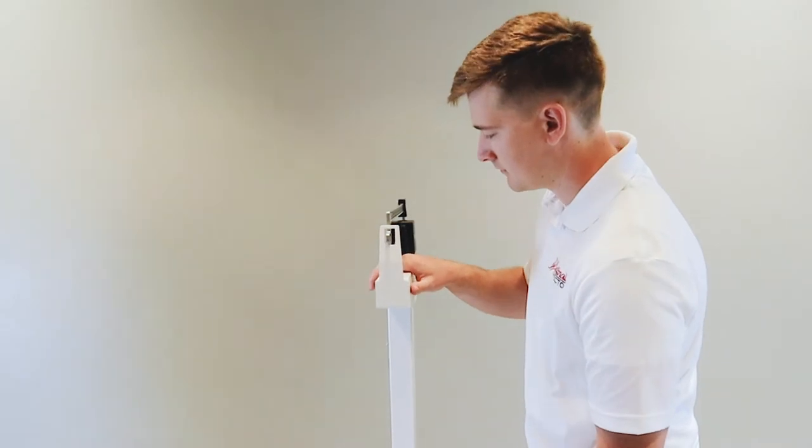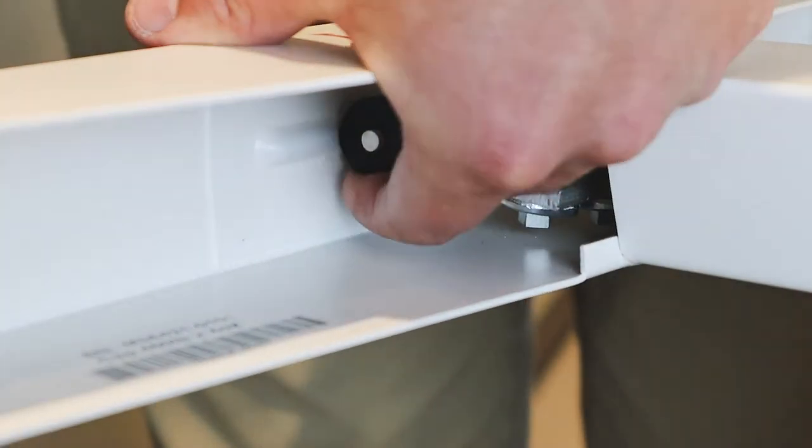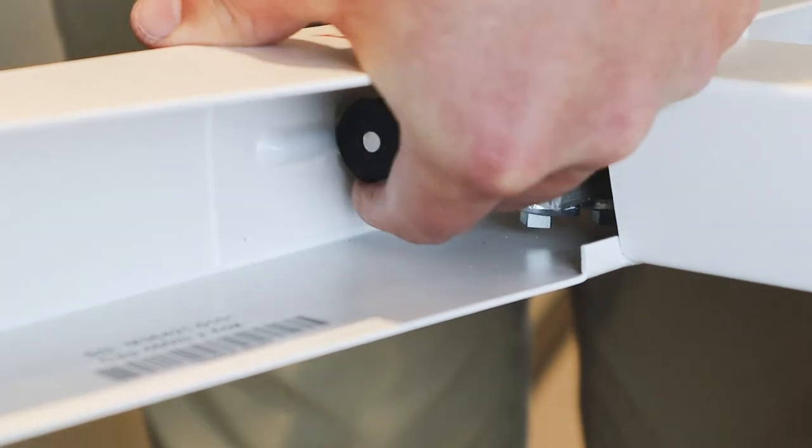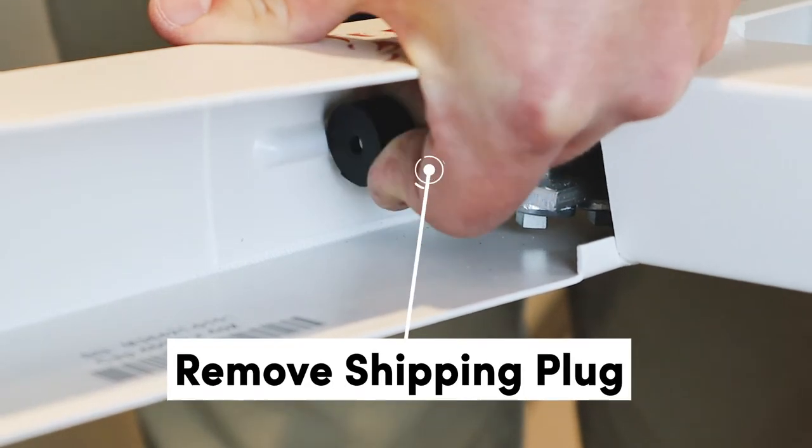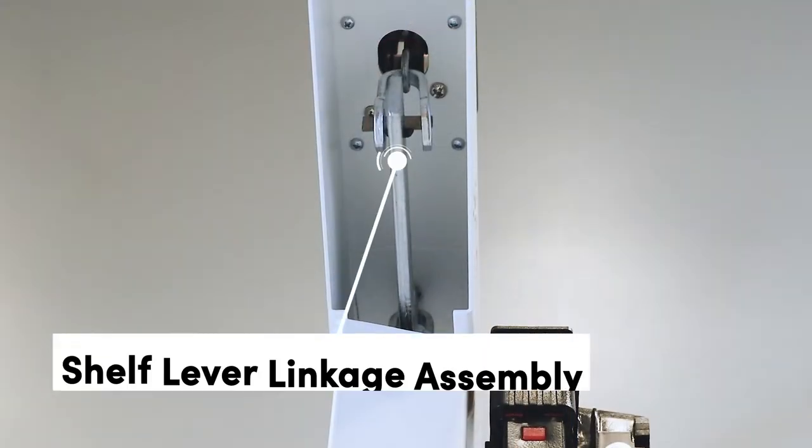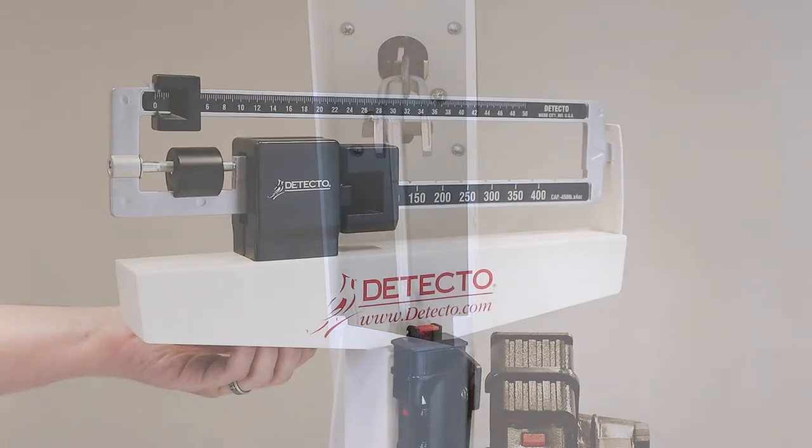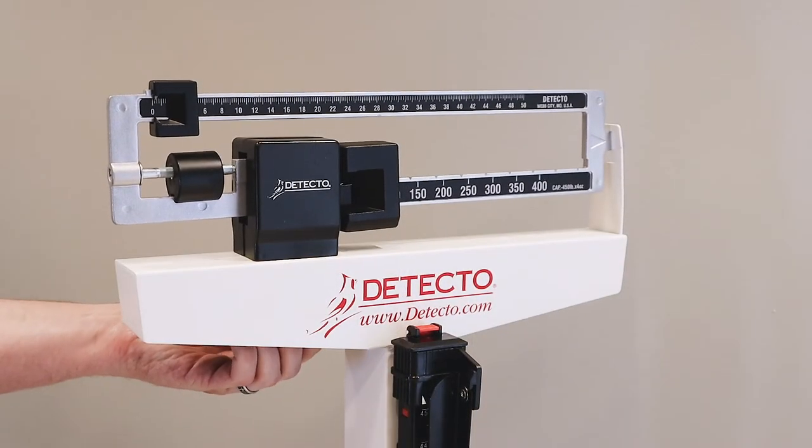Gently place the scale on the floor and slightly tip it to one side. The linkage and shipping plug can be seen by looking up underneath the way beam headpiece. Remove the plug and then visually ensure that the shelf lever assembly linkage is centered and properly aligned. The linkage must be free floating for the scale to weigh properly.